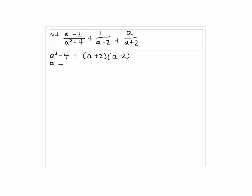And the second denominator, a minus 2, is already factored, so we're done. And the third denominator is also factored out, so we're already done.